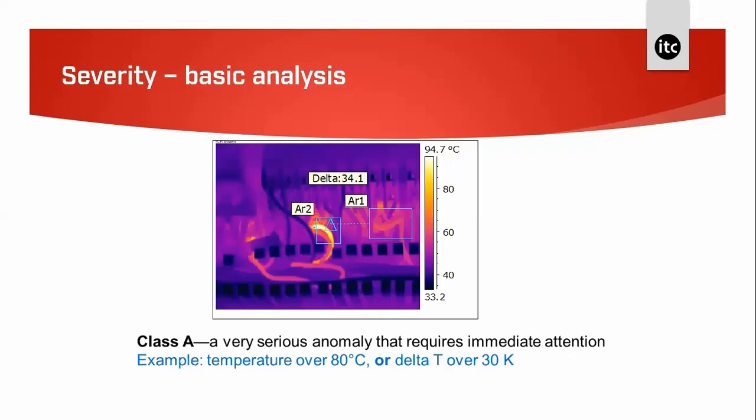This image shows a delta T of 17.7°C — again a Class B problem. The last image is a Class A problem with a delta T of 34.1°C. From these examples we can see how simple it is to classify the fault found, which in turn helps in reporting the problem and working out a repair strategy.